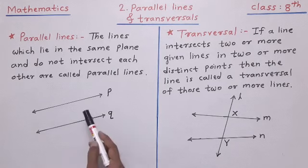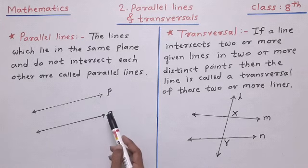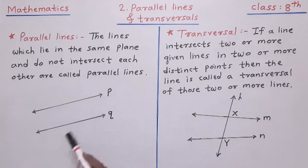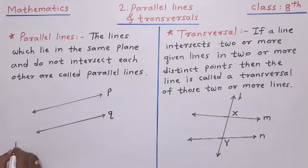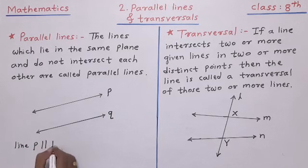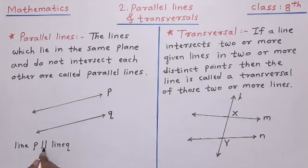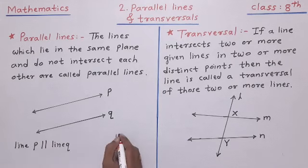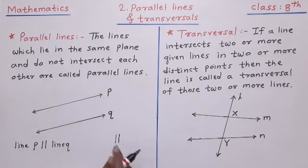So in the figure, line P is parallel to line Q, or line Q is parallel to line P. This can be represented as line P parallel to line Q. This is the symbol for parallel lines. When you draw two vertical lines, it represents the symbol of parallel lines.